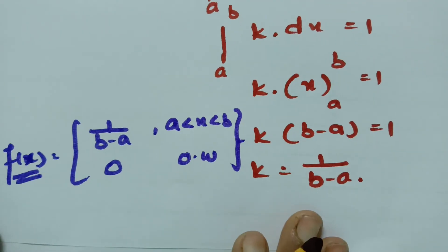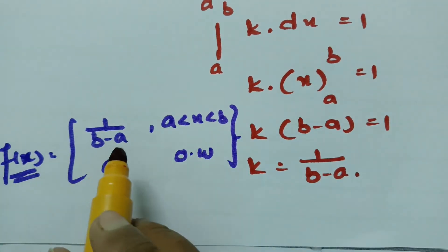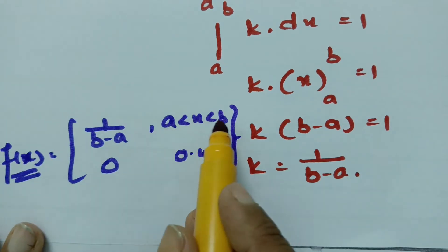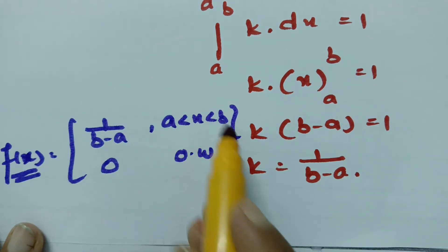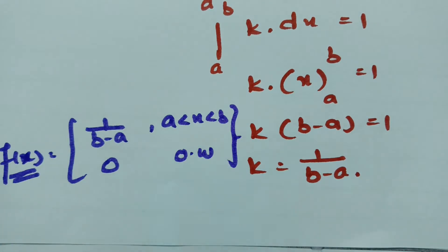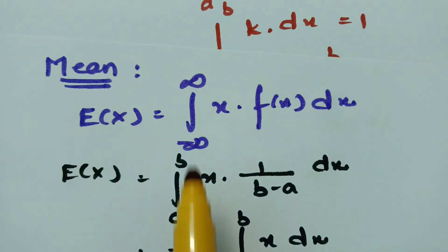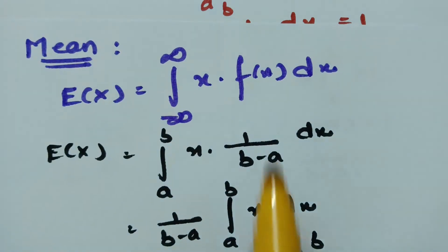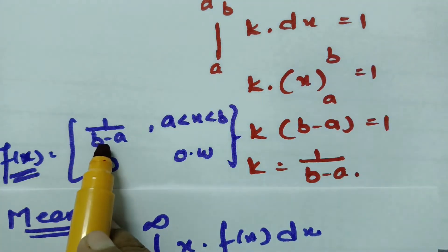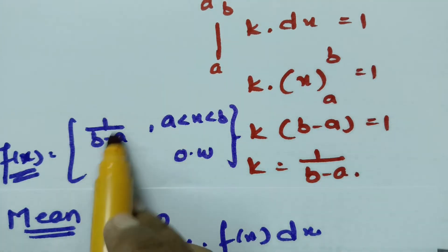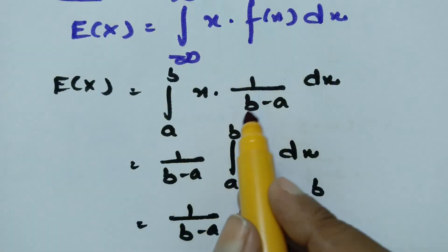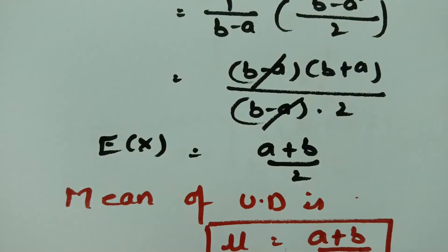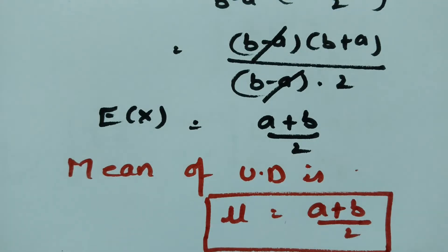To summarize: the probability density function is 1/(b minus a) for x between a and b, and 0 otherwise. Using the mean formula — integral from minus infinity to plus infinity of x times f(x) dx — with f(x) equal to 1/(b minus a) between a and b, we get the mean of the uniform distribution as (a + b)/2.